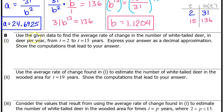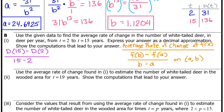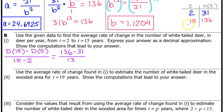Part B1: Use the given data to find the average rate of change in the number of white-tailed deer, in deer per year, from t equals 2 to t equals 15 years. Express your answer as a decimal approximation and show the computations. In general, the average rate of change of f of x on the interval from a to b is given by f of b minus f of a over b minus a. So the average rate of change from 2 to 15 is d of 15 minus d of 2 over 15 minus 2. You must show your setup — this is mandatory.